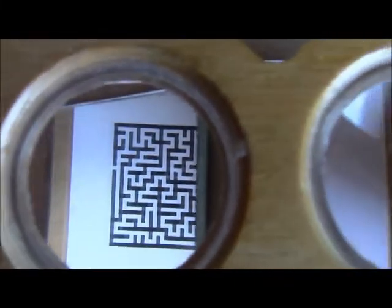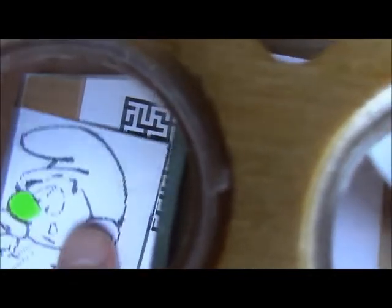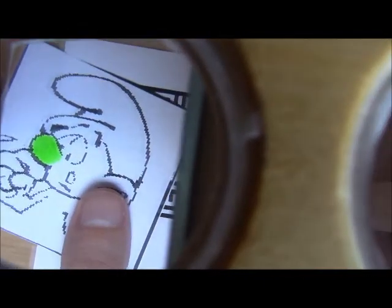So one eye would be fed a maze or whatever image you would like to show it. An easier version would be an image like a Smurf, and the other eye would be seeing a blank sheet of paper.